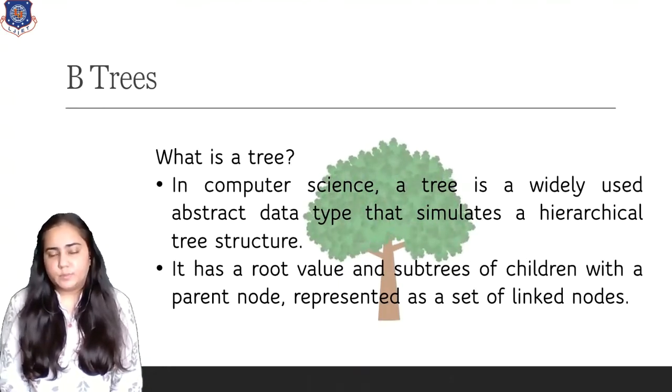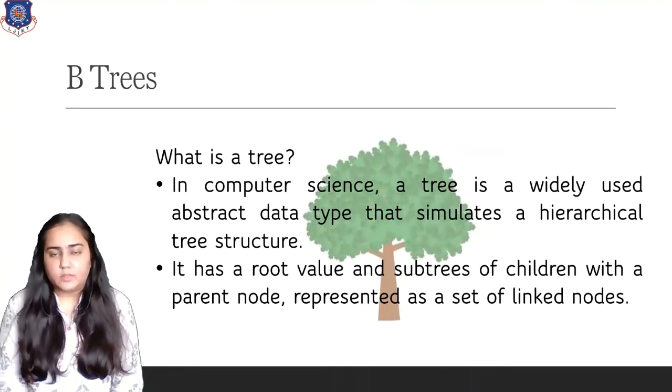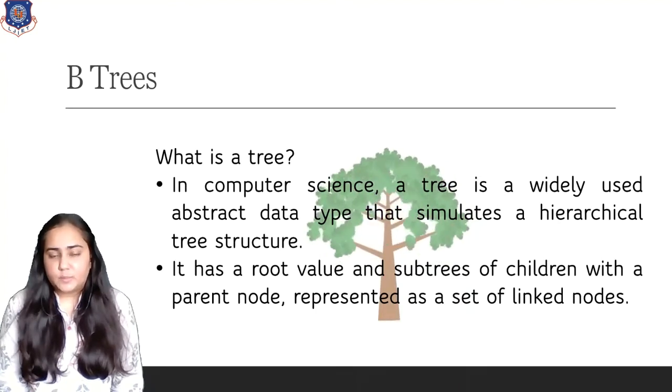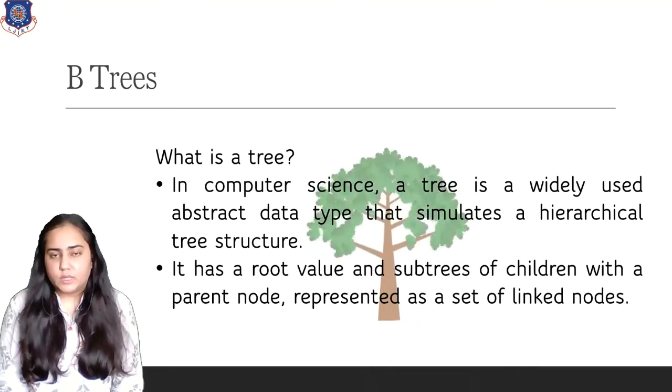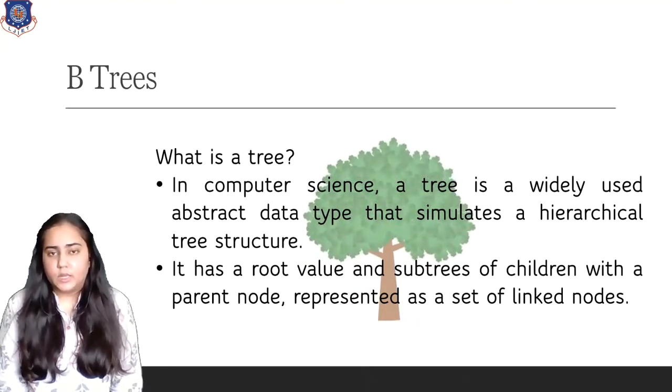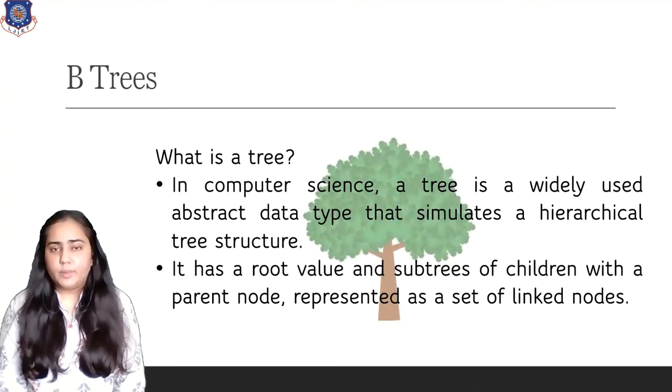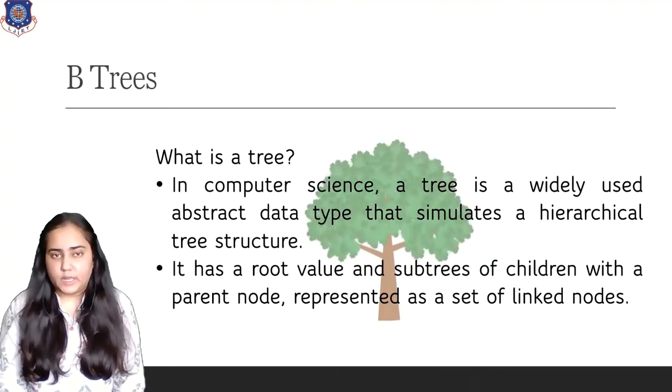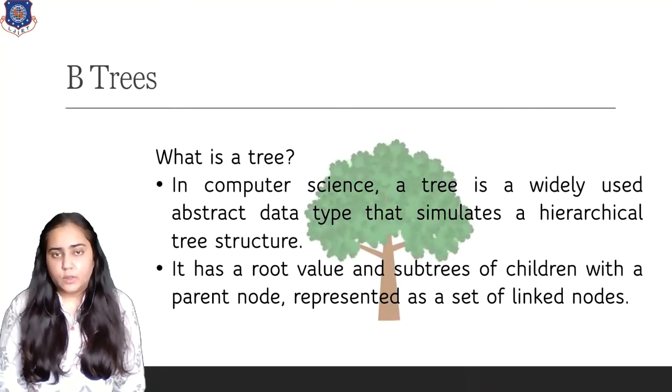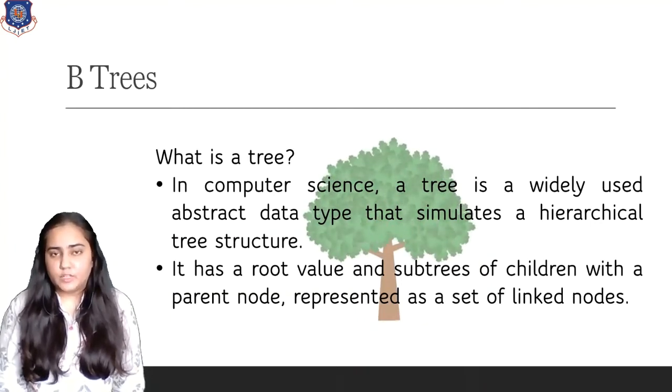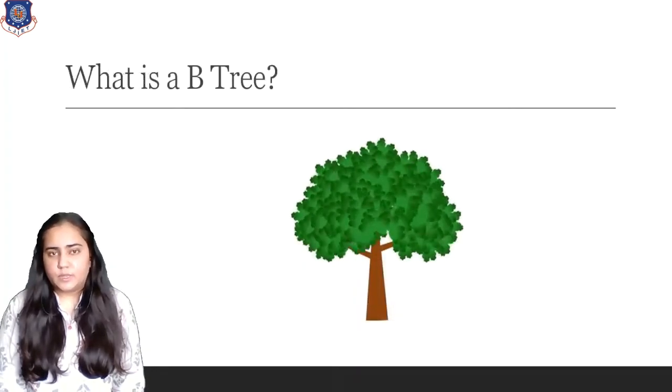B-trees are used specifically to implement multi-level indices in DBMS. In my previous video I explained primary indices, secondary indices which are clustering and non-clustering, and also dense and sparse indices. But there was a fifth type of index which is a multi-level index. This is the index I'm going to talk about in this video. To make this index we use a B-tree which is a data structure in computer science. So let's see what a B-tree is.